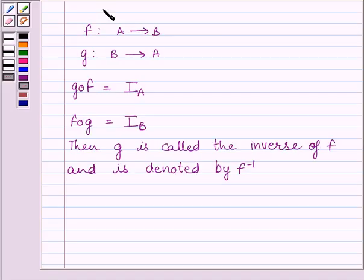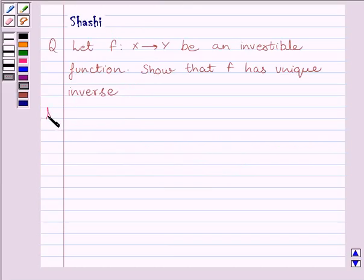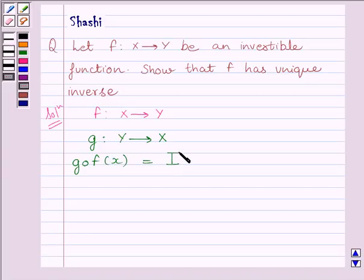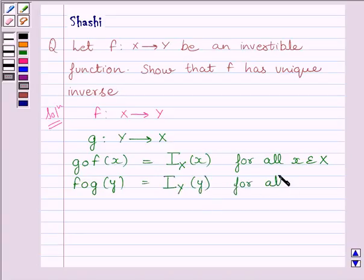This is the key idea to solve the given question. Let us now start the solution. We are given that function f from x to y is an invertible function. Now since f is an invertible function, so there exists a function g from y to x such that g of f is equal to identity function on x for all x belonging to set x, and f of g y is equal to identity function on y for all y belonging to set y. Also, f is one-one and onto function since it is invertible.